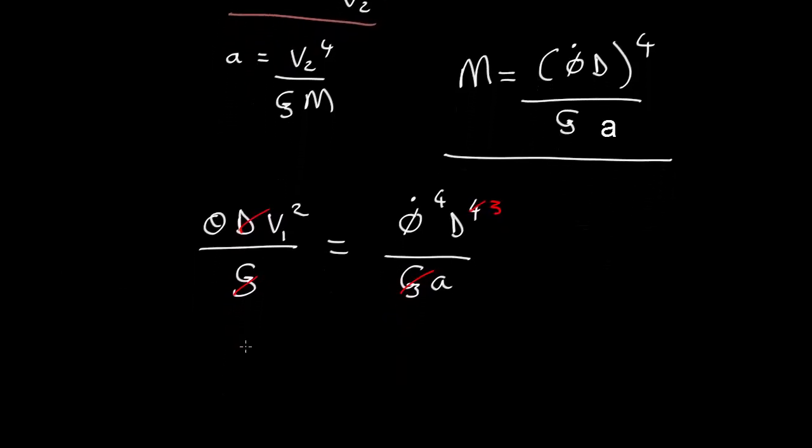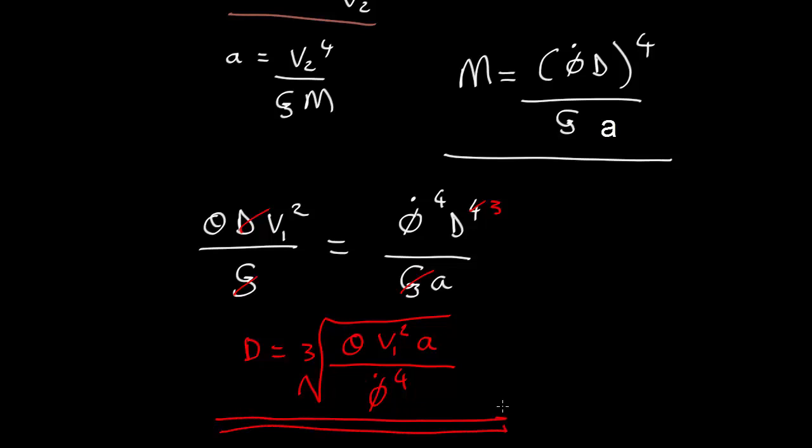...is d equals the cube root of theta v1 squared a, all over phi dot to the fourth power. So we can work out d in terms of only things we can measure: theta, how far away the side dots are from the center, the Doppler velocity of those side dots, the acceleration of the object in front, and the angular speed of the object in front raised to the fourth power.